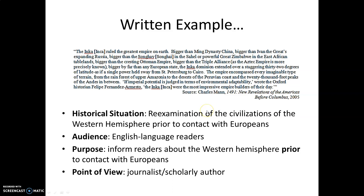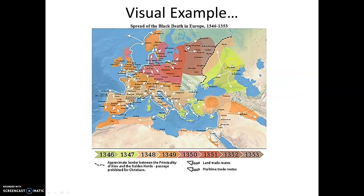The audience? Charles Mann is a scholar who writes in the English language, so that's who it's intended for. This is not just a scholarly article — it was a published book, so he's probably trying to reach a larger audience. Purpose: to inform readers about what was going on prior to contact with Europeans. Again, 1491: New Revelations of America Before Columbus makes that clear. And the point of view? Mann is a journalist — scholarly, but publishing something for a wider audience. So that's a more written example.